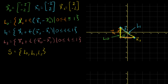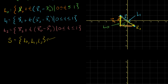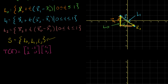What I want to do now is understand what happens to this triangle when I apply a linear transformation. Let me define a transformation T of x to be equal to the matrix [1, -1; 2, 0] times the vector x. We know any linear transformation can be written as a matrix. So let's figure out what our triangle looks like when we transform every point in it.